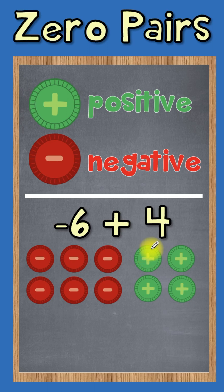So we'll cross off this green and this red, this green and this red. Here's another pair of green and a red, and another pair of green and a red. And we do that until we have no more zero pairs to make.